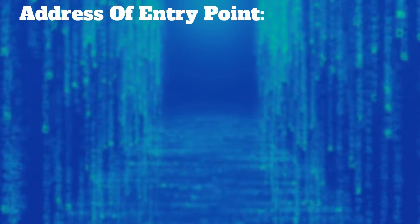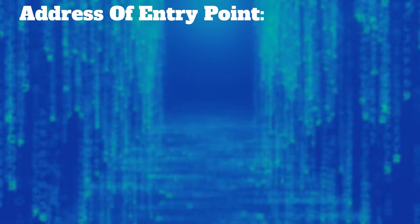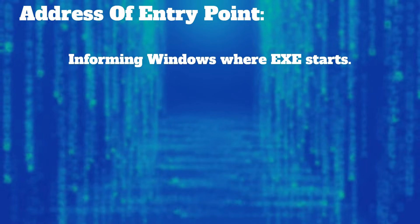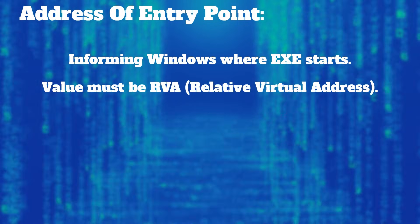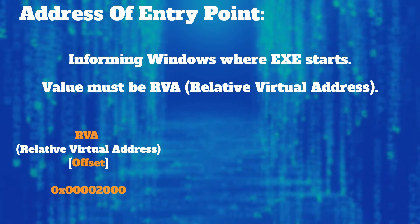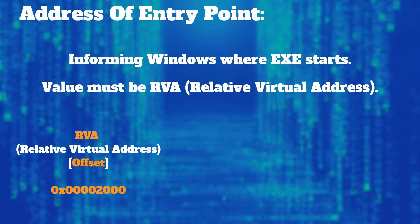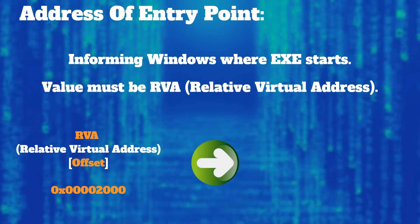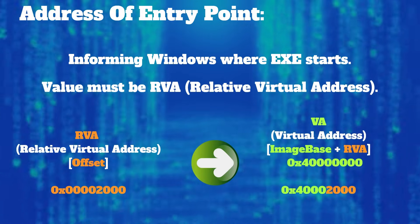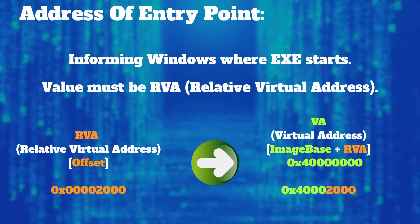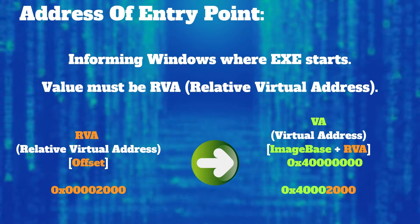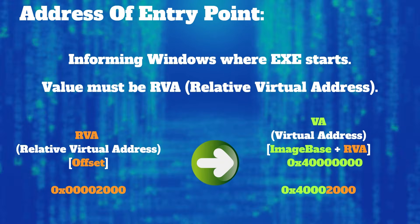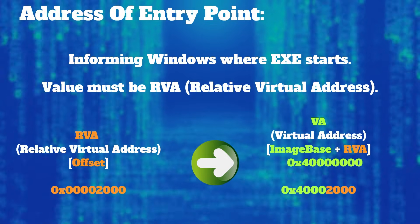Address of entry point tells Windows where to start executing the EXE. This member of the optional header contains an RVA — relative virtual address — where execution starts. When the file is loaded, Windows changes the relative virtual address into a virtual address by adding the image base from the optional header. I will create a video explaining what happens with an EXE after loading.